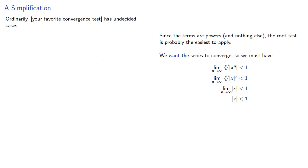Now you might remember that ordinarily your favorite convergence test has undecided cases. And note that in this case, if the absolute value of x is equal to 1, the root test would have given us the limit of 1, and we'd need to apply some other convergence test.